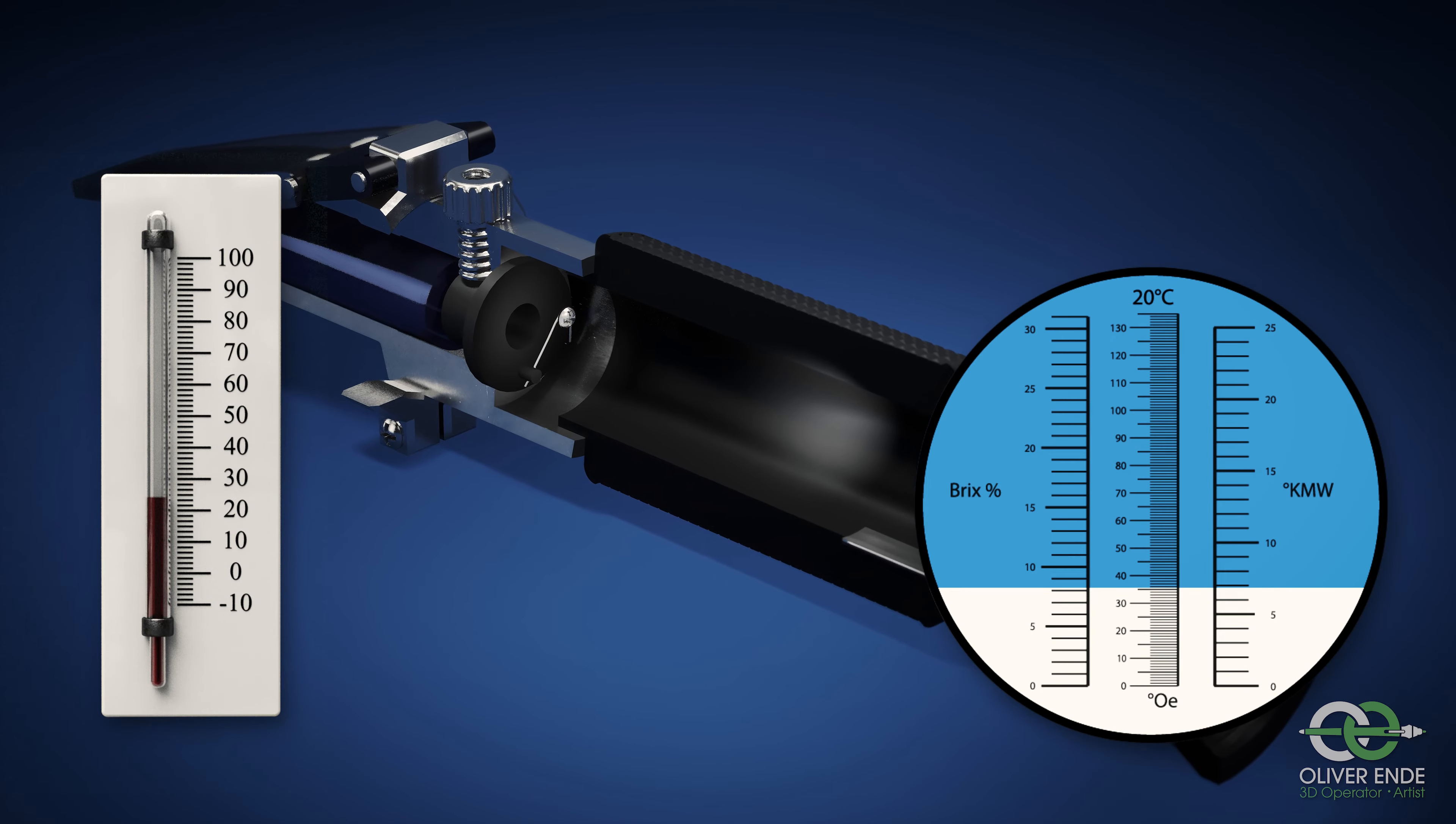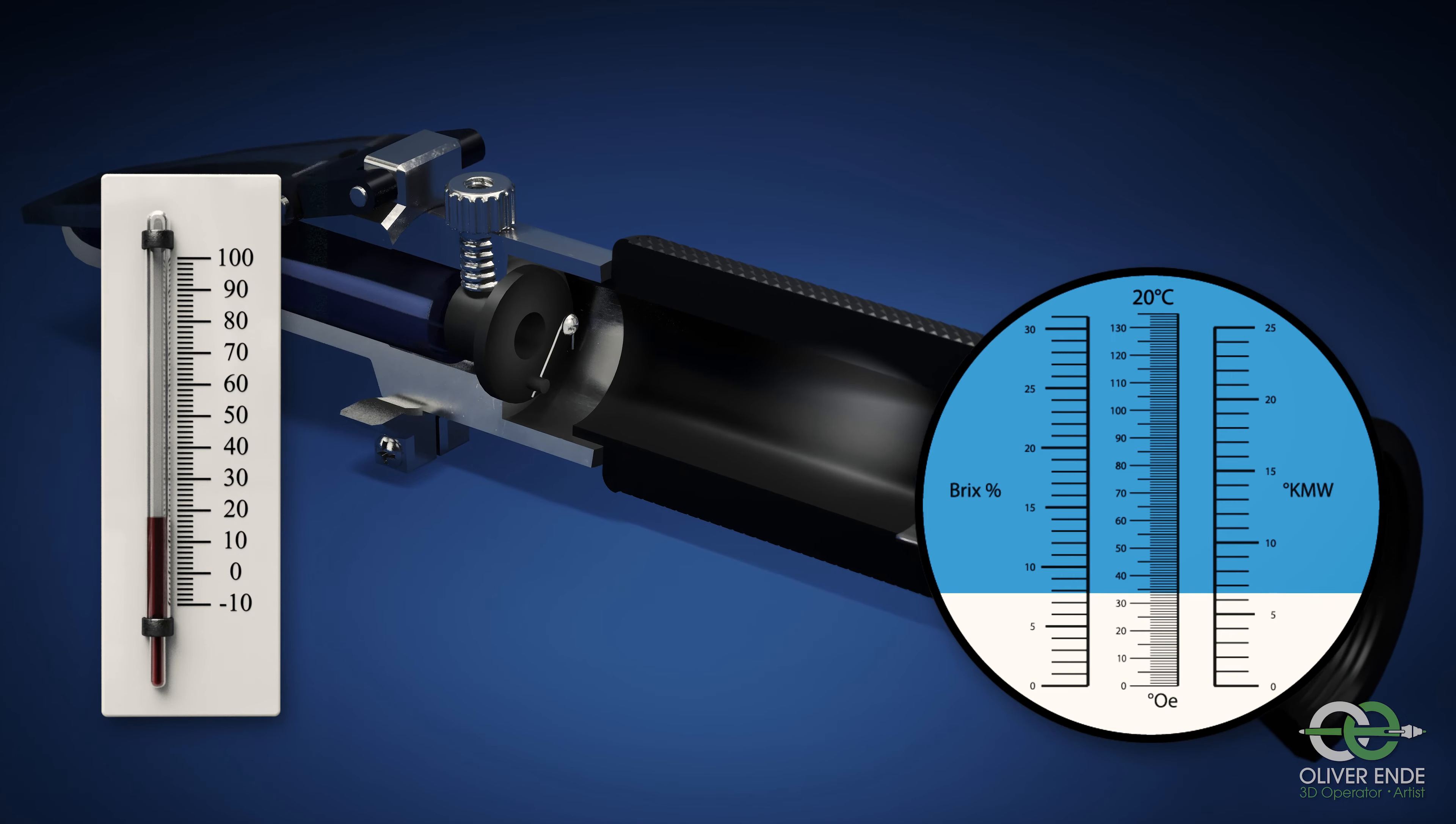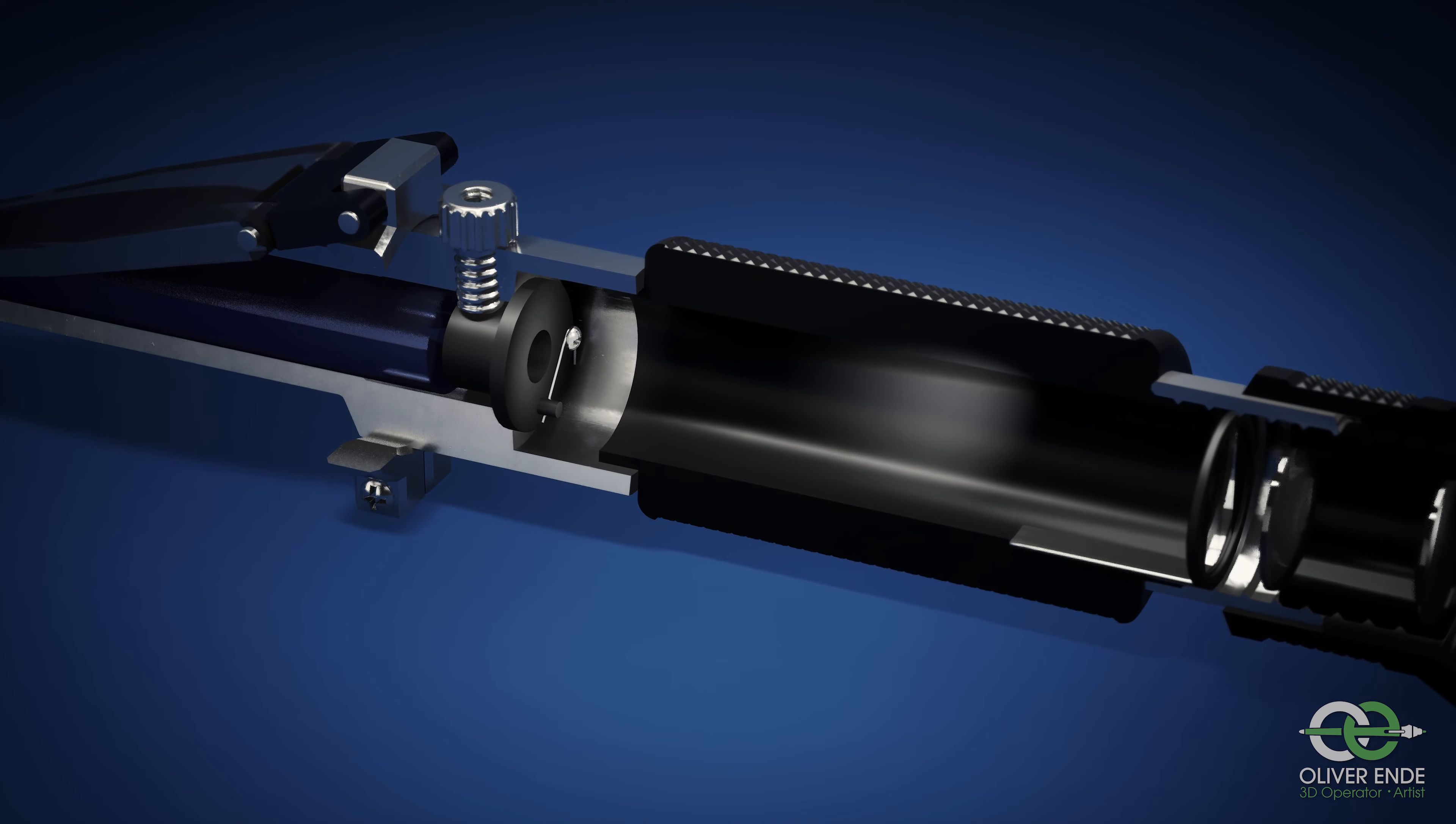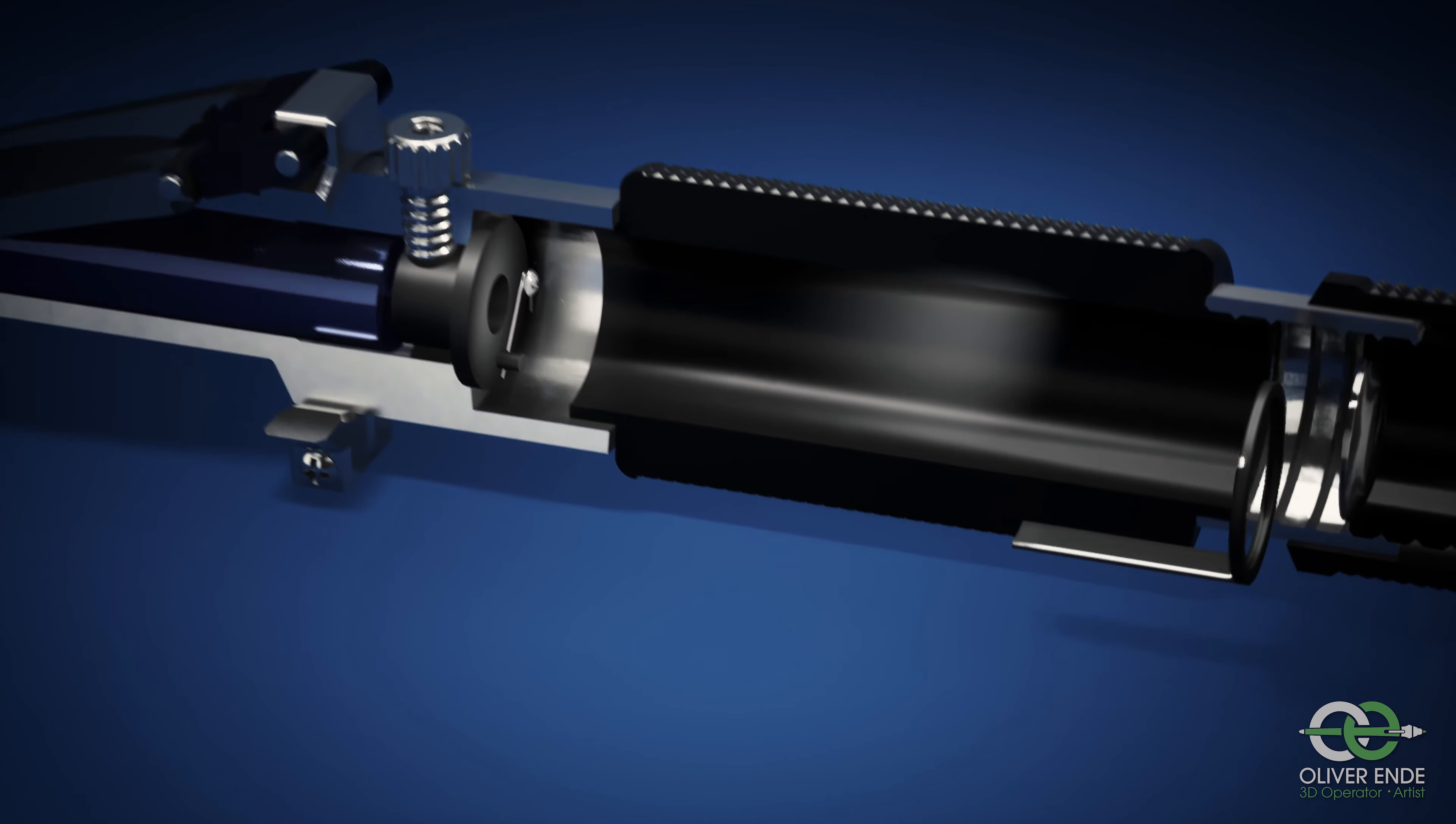If you measure the same liquid at different temperatures with a refractometer, you will get different results. The temperature therefore has an influence on the accuracy. To compensate this difference, there is a so-called automatic temperature compensation, also called ATC. The measuring scale is mounted on a bimetal. Depending on the temperature, the bimetal aligns the scale accordingly.